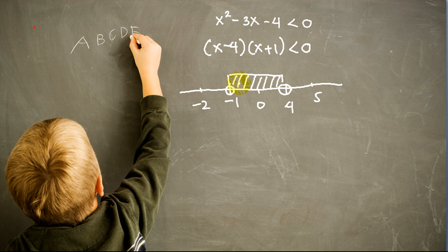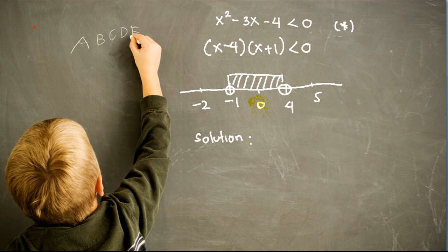Therefore the only solution is the numbers between negative 1 and 4. In interval notation, the solution to the original inequality is the open interval from negative 1 to 4. Note that negative 1 and 4 themselves are not part of the solution, so the interval is open at both endpoints: negative 1 to 4, not including the boundaries.